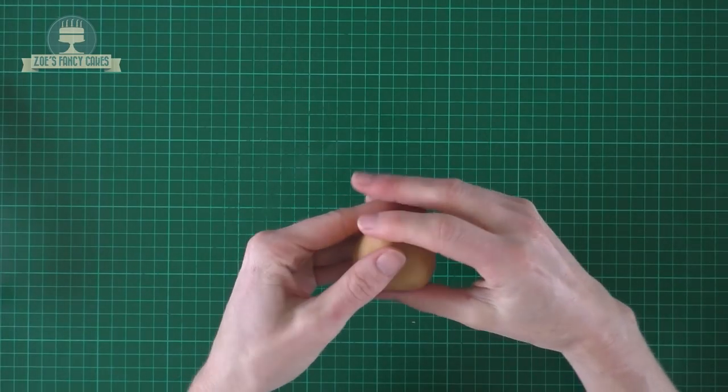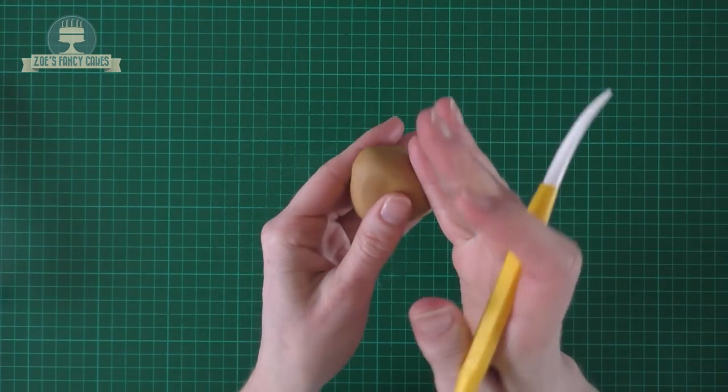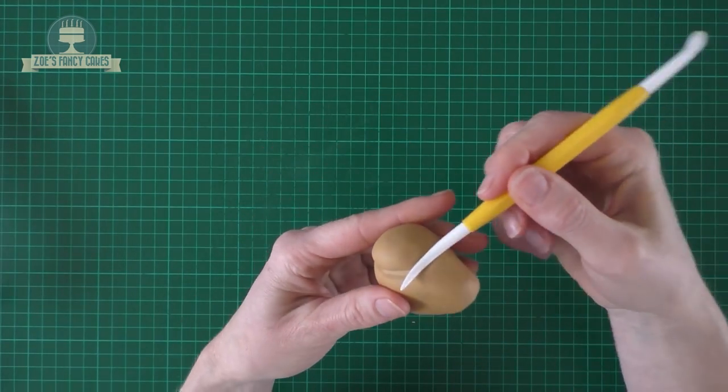A fat little teardrop for the body. I'm just using a little modeling tool to just push in a little curve down near the bottom at one side. This is going to be part of the leg and we'll do the same on the other side, bring it down to the bottom.